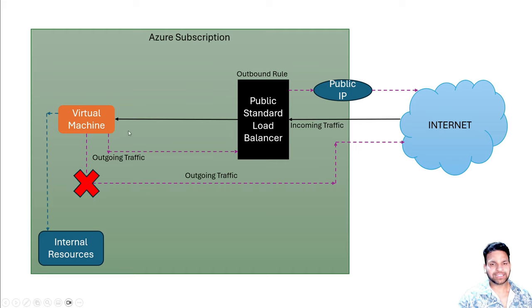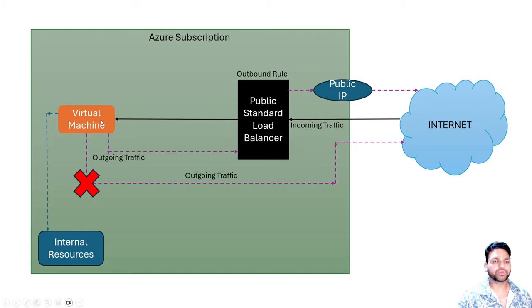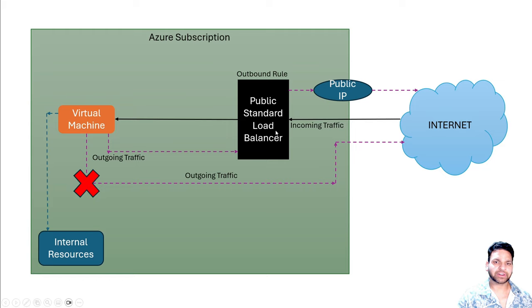In the case of the public load balancer, either you can use the firewall, or if you don't have a firewall in your environment, you can use the outbound rule on the public standard load balancer for the outgoing internet traffic.